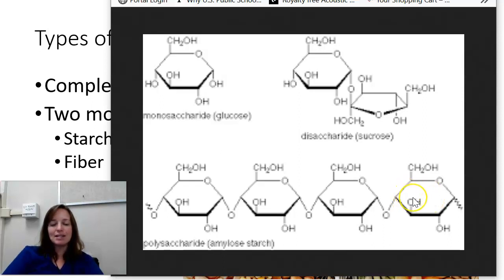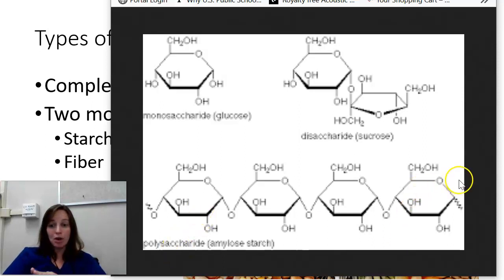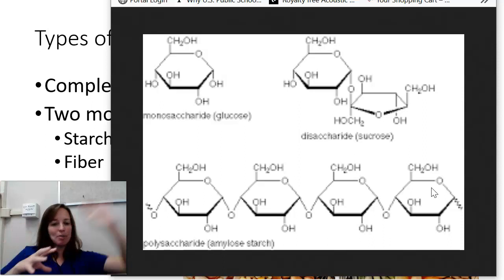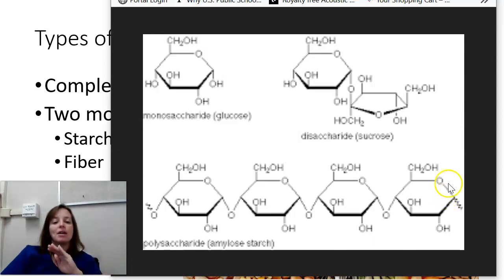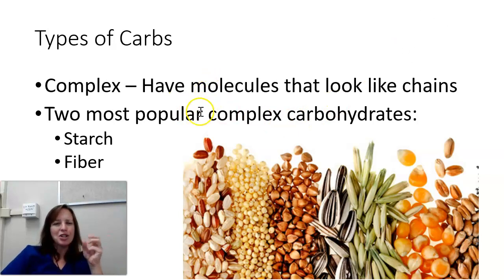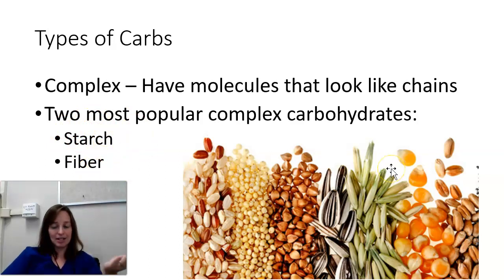If you look at polysaccharides on a molecular level, it's not just four rings - it's like hundreds of rings, branching off of each other. Some chains don't branch at all, but then other ones do. The two big ones in our diet are starch and fiber, and you can see evidence of both of those on our Nutrition Facts labels.